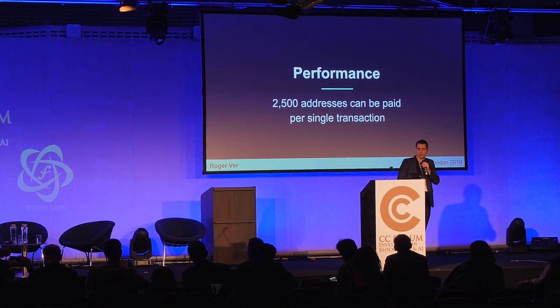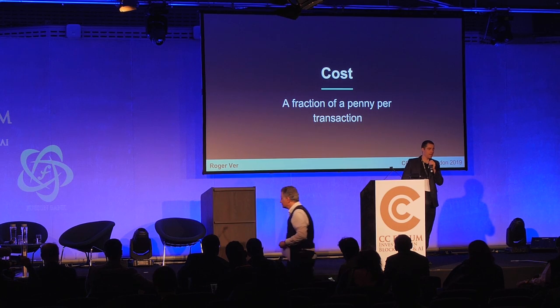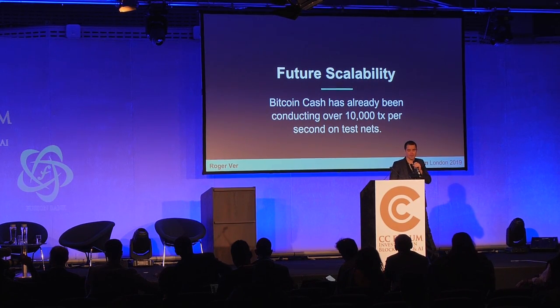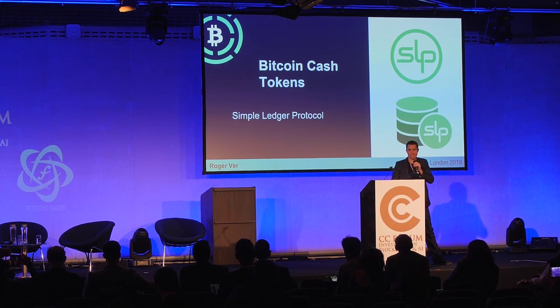Scalability is really, really important. In a single dividend payment transaction, you can pay up to 2,500 different addresses, and it costs less than a penny to do so. If you have more than 2,500 token holders, you just make multiple transactions — 2,500 people paid per transaction for a fraction of a penny. Bitcoin Cash can already process more than 100 transactions per second right now today, compared with Bitcoin, which can handle about three transactions per second. Bitcoin Cash has already tested more than 10,000 transactions per second on its testnet — in line with Visa.